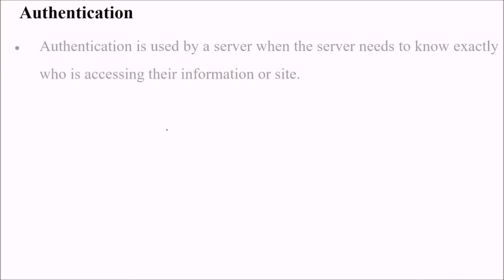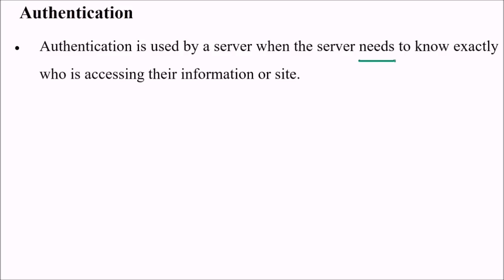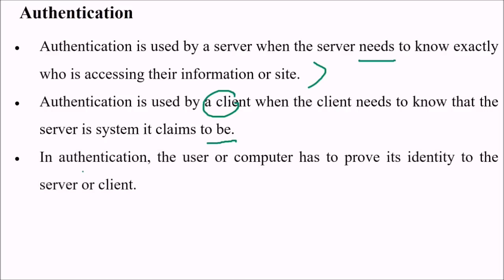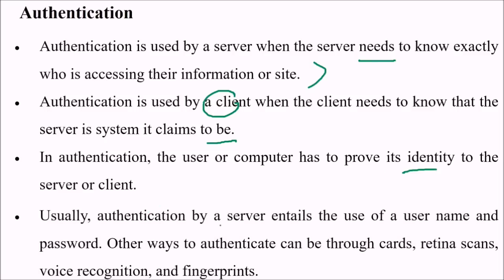Authentication is used by a server when the server needs to know exactly who is accessing the information on a site. Authentication is also used by a client when the client needs to know that the server is the system it claims to be. The user or computer has to prove its identity to the server or client — usually through a username and password, or other methods like card swipes, retina scans, voice recognition, or fingerprints.